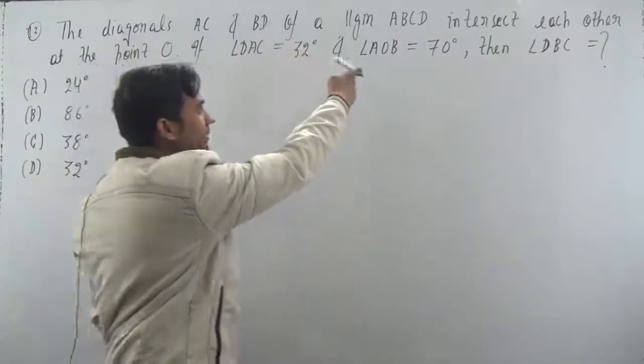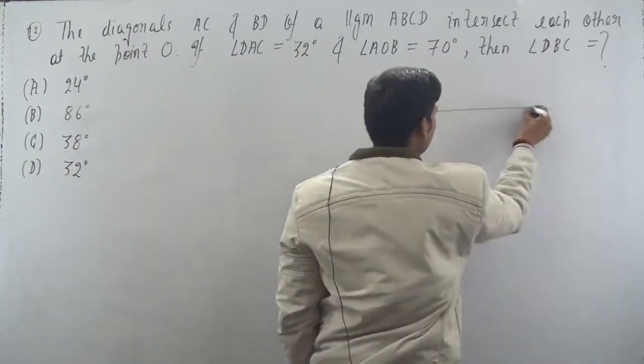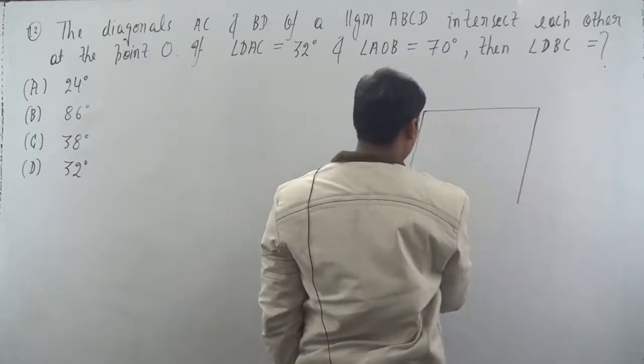Question number 12: The diagonals AC and BD of a parallelogram ABCD. So this is very easy question. This is a problem.